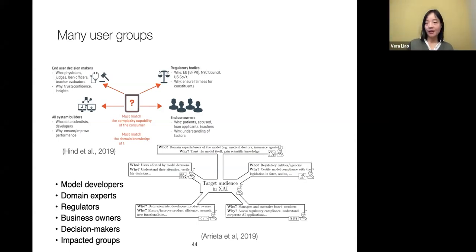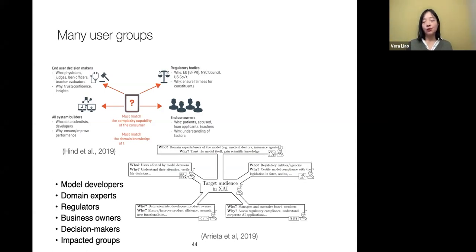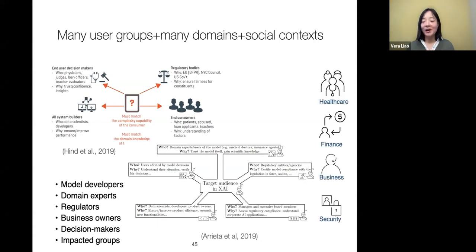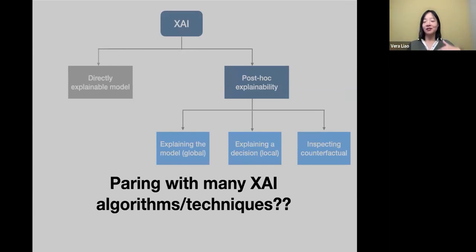The stakeholder group also matters — many different people may want explanation. Going back to the loan application use case, typical stakeholder groups include the model developer who needs explanation for debugging, domain experts who want to verify the model, regulators who need to audit it, business owners deciding whether to use the model, and decision makers and impacted groups as discussed. Paired with different systems deployed in different domains and social contexts, the challenge is finding the right algorithm for this combination.